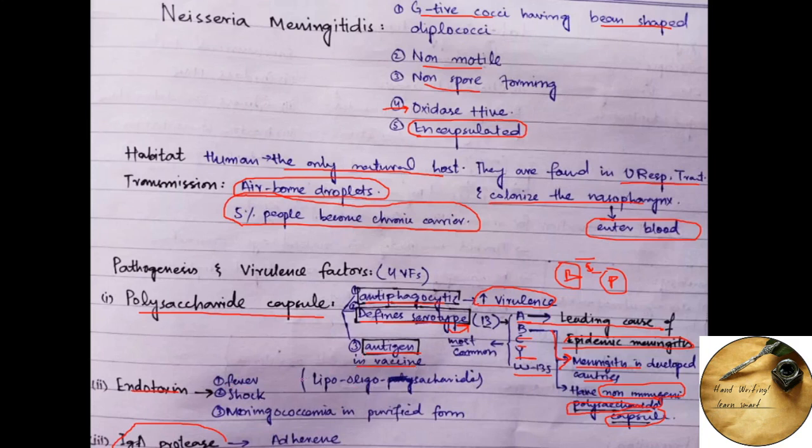Now coming towards the endotoxin, it causes severe shock and meningococcemia if it is injected in purified form. The important point regarding the endotoxin is that it is lipooligosaccharide in comparison to the other gram-negative bacteria which has lipopolysaccharide.